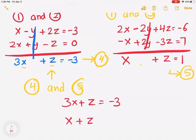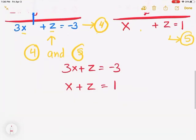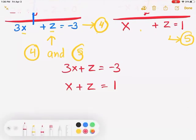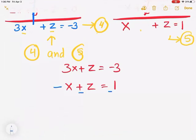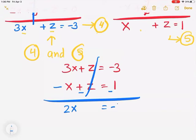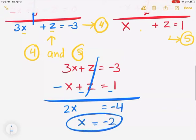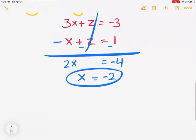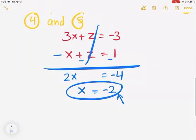Equations 4 and 5: 3x plus z equals negative 3, and x plus z equals 1. To eliminate z, I multiply the bottom equation by negative 1, making z negative. Canceling the z's: 3x minus x gives 2x equals negative 4, so x equals negative 2. I got my first answer.